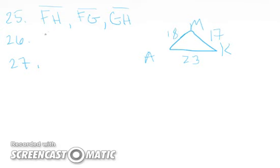So the smallest angle is going to be angle A, it's opposite angle K, and then the largest angle is going to be angle M. So there you go.